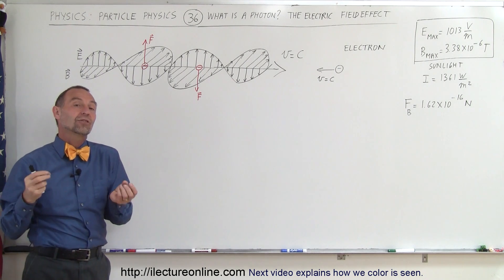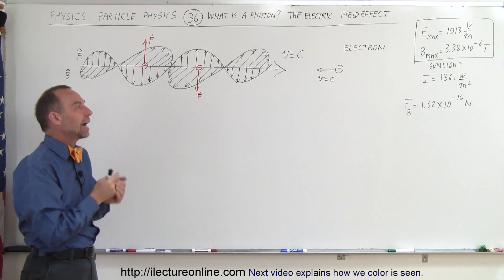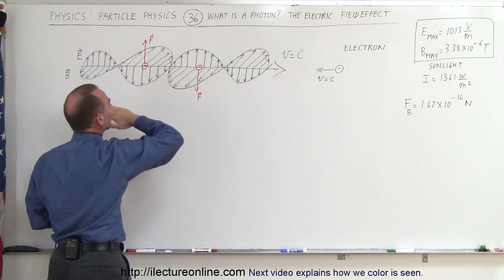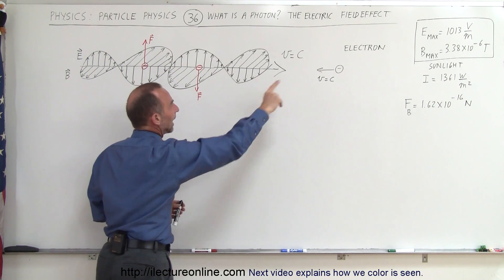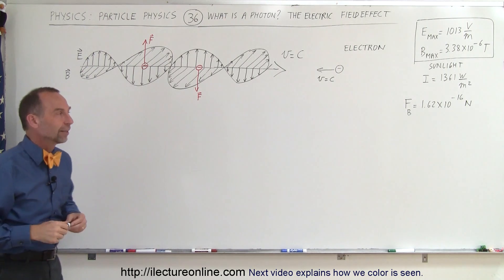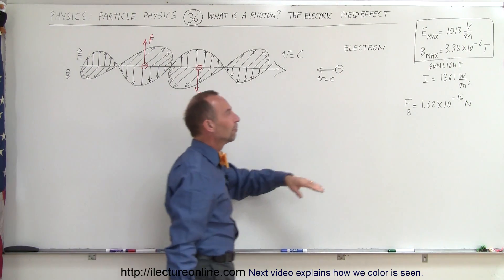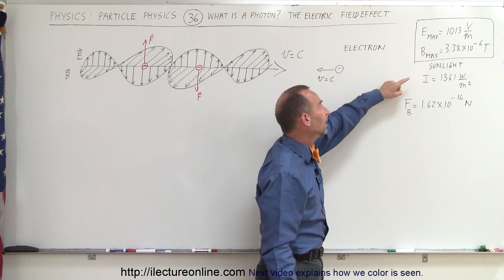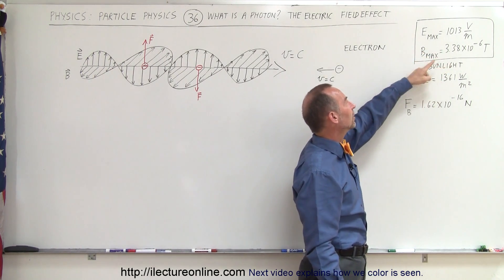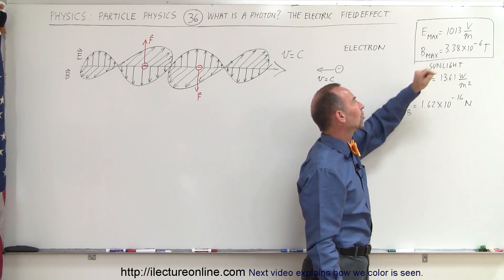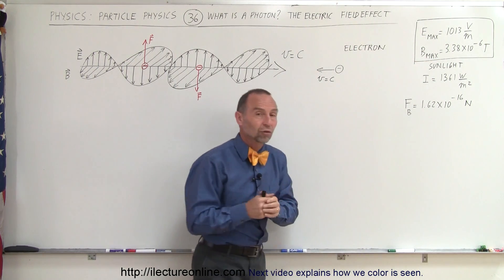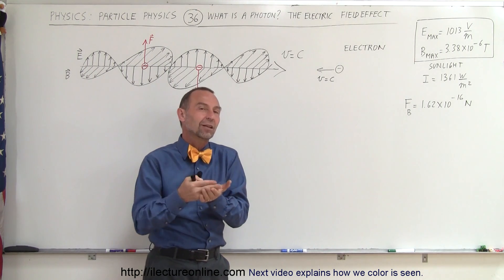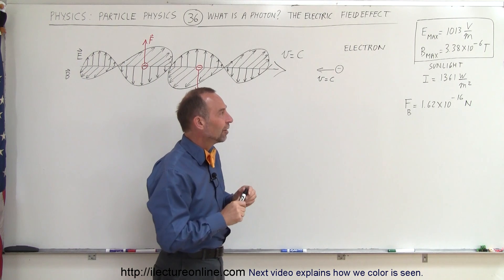In this video we're going to see what the electric field oscillation effect will be on the electron. Notice that the electric fields will be oscillating up and down while the magnetic fields are oscillating left and right, and there's an electron that the photon will pass by at the speed of light. We're using sunlight photons that have an E-max of 10¹³ volts per meter and a B-max of 3.38 × 10⁻⁶ Teslas — the maximum oscillation strength of the electric and magnetic fields inside a photon of sunlight.